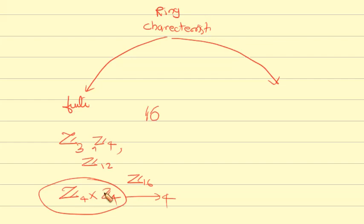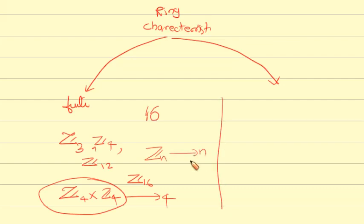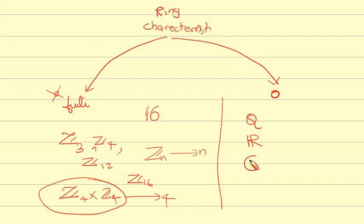For Zn, the characteristic value is n. For rings with a finite characteristic value, that is a finite value. For infinite rings such as Q, R, and the complex numbers C, the characteristic is 0.